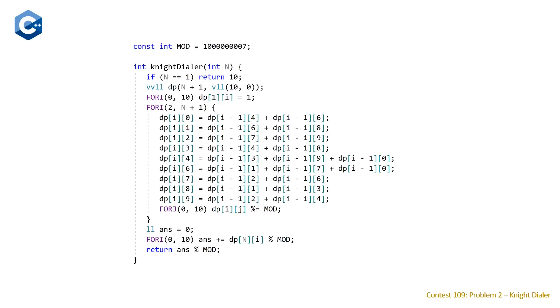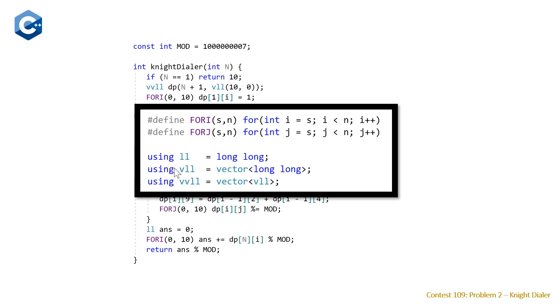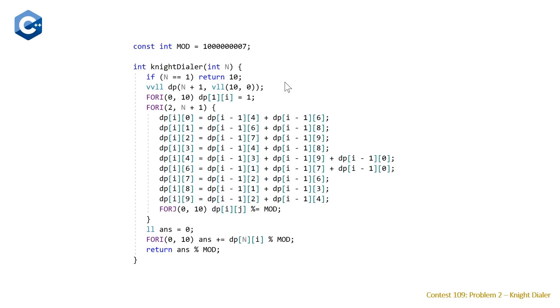So here is our C++ solution. We can see that we have a function, knightDialer, which takes a single parameter, an integer n, which represents the number of digits, and returns a single integer, which represents the different number of distinct numbers that we can have that have n digits. So right at the top here, you can see we have our special case if n equals 1, just return 10. And then we deal with all our other cases. So we have VVLL, which stands for vector of vector of long longs. And then we're initializing that to have the dimensions n plus 1 for our first dimension, which is going to just be the number of digits, and then 10, which is the different number of keys that we have in our keypad. Note that these are just type aliases.